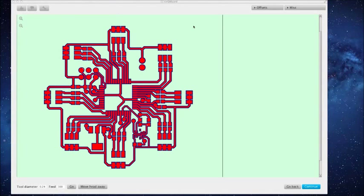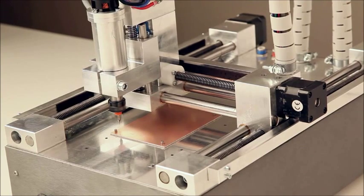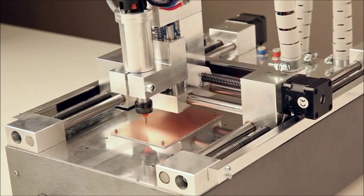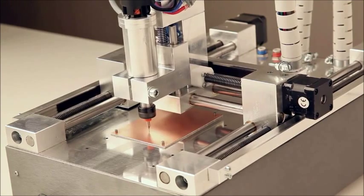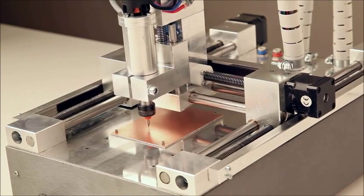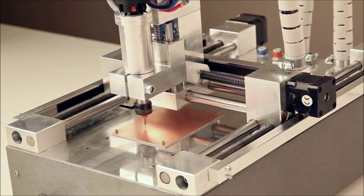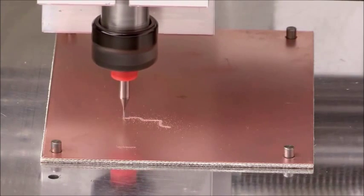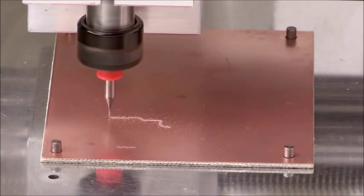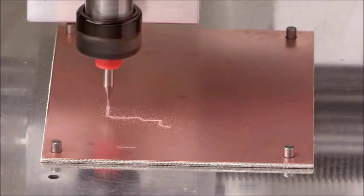This screen shows the traces that will be milled on the top layer. When everything is ready, click on the Go button sends the program to the machine, and it starts milling the traces. The tool follows the outline of every trace on the board and isolates it from surrounding copper. One by one, every trace is isolated.